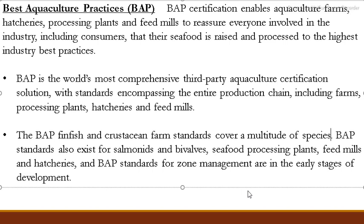Many people eat seafood, so seafood safety is critical. Fish, crustaceans like lobster and crab — if we eat something toxic after human consumption, it will be harmful. This is why we need to follow food safety measures. BAP certification covers fin fish and crustacean farm standards covering a multitude of species, such as salmon, fin fish, crab, and lobster.